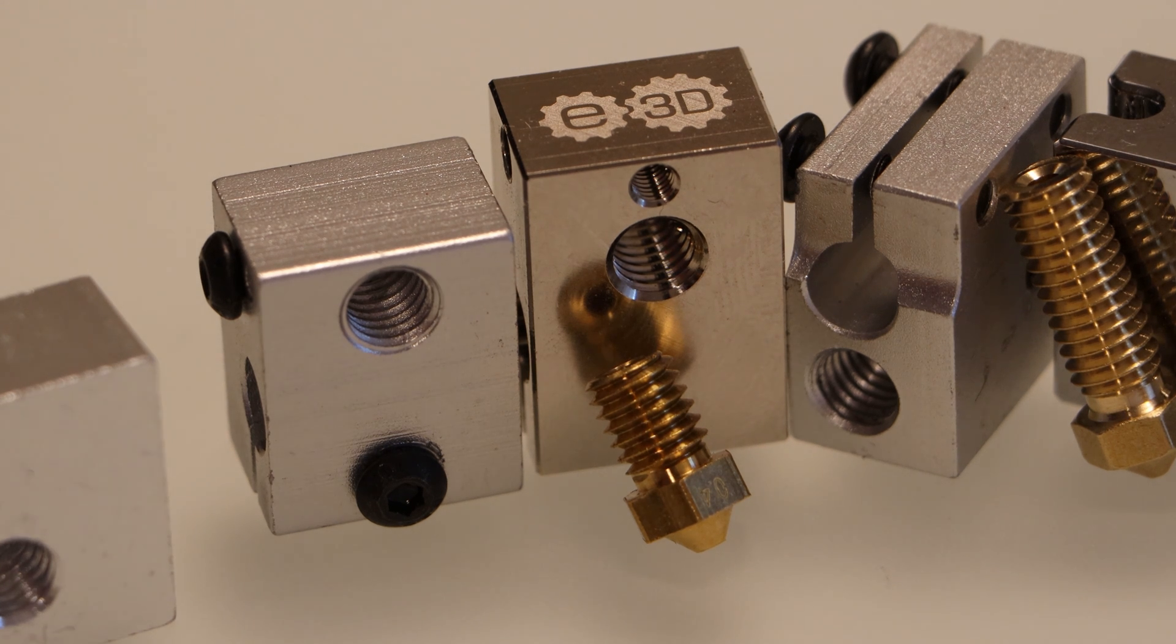The main advantage of aluminum is that it's much cheaper than copper. Where copper really shines compared to aluminum is thermal conductivity. It has about twice the thermal conductivity as aluminum. That just means that heat is being transferred from your heater cartridge to the rest of your components in the heater block much faster, meaning that you'll have better control over the temperature of your filament as you're extruding it.